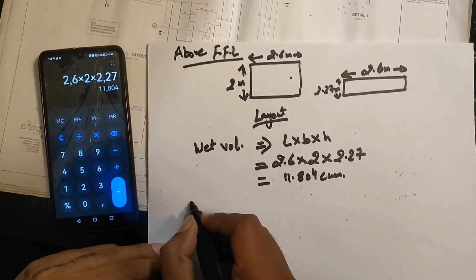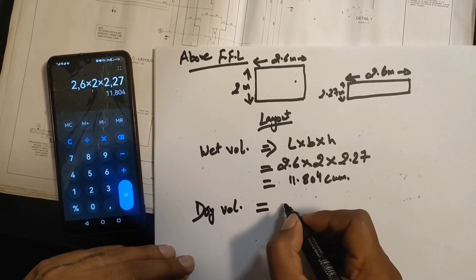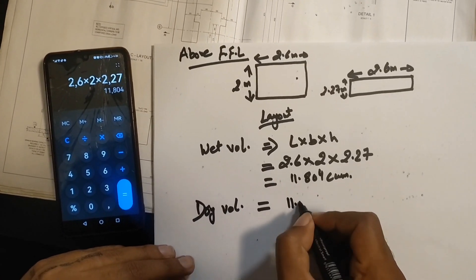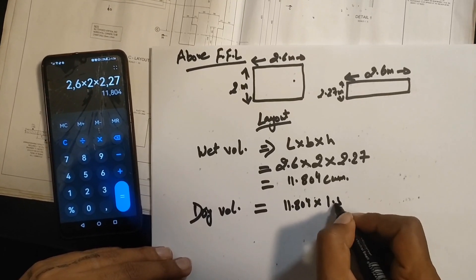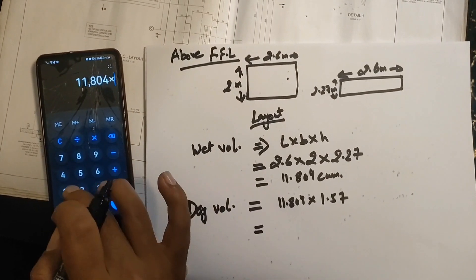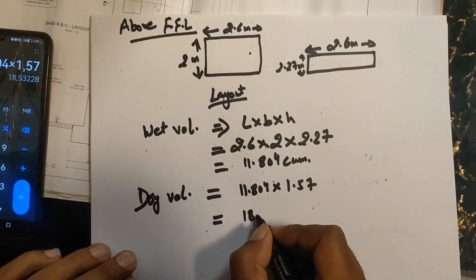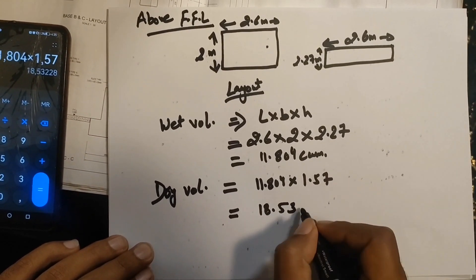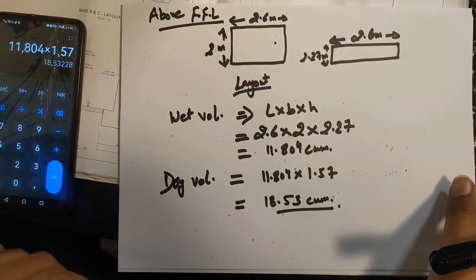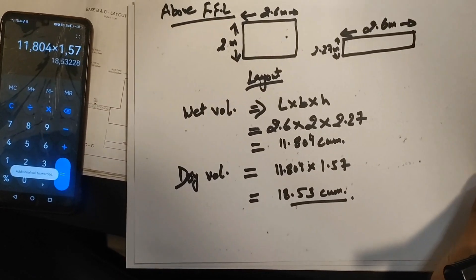Now we find the dry volume for the above FFL section: wet volume × 1.57 = 11.804 × 1.57 = 18.53 cubic meters. Now let's find the quantities of cement, sand, and aggregate to make a mixture of 18.53 cubic meters of concrete.